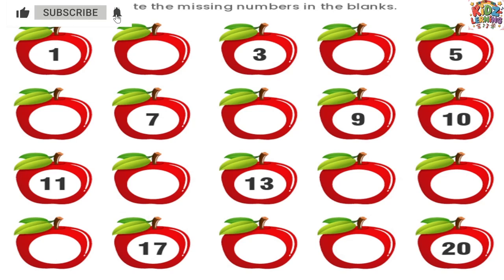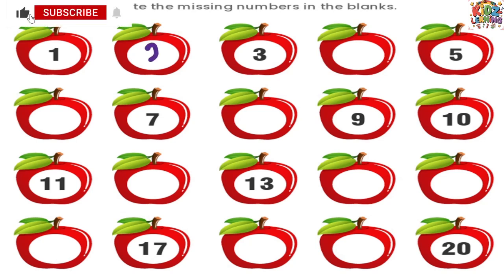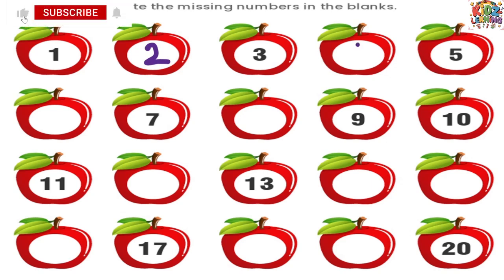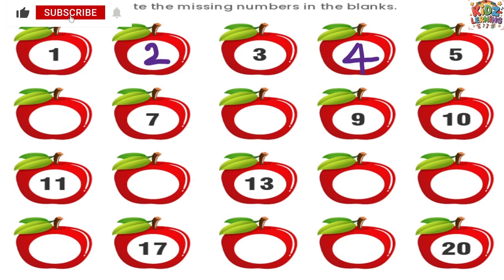We have the number 1. After 1 comes 2, so let's write 2 in the next apple. Then we have 3. After 3 comes 4. Let's write 4 in the blank apple. And then comes 5.